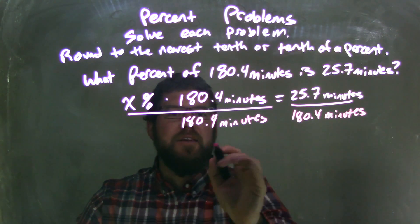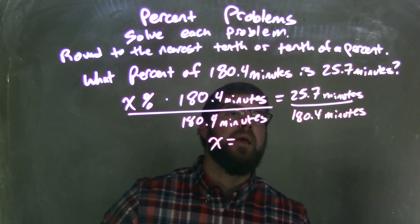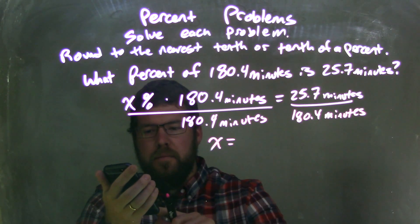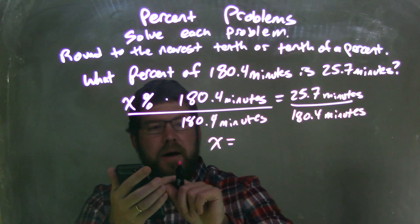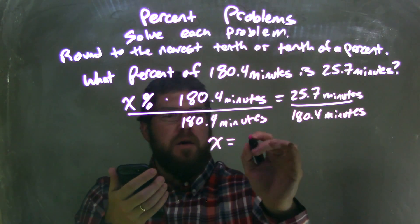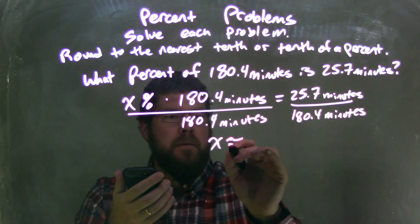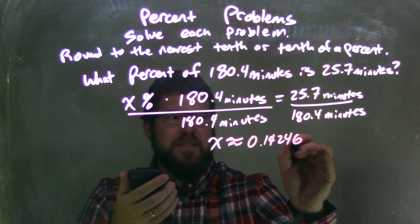Dividing by 180.4 minutes on both sides leaves me with my x here. I don't need it as a percent. It's going to be equal. 25.7 divided by 180.4. This is a rounded answer, so 0.14246.